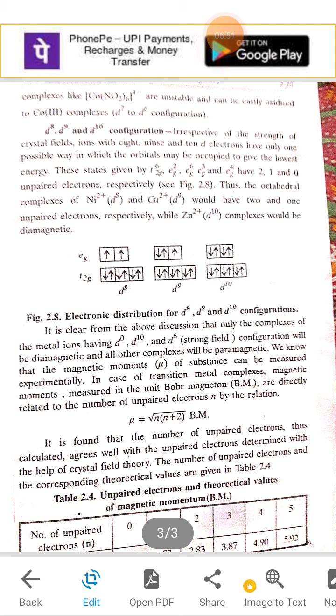So the complexes of zinc are also colorless. If they are colored, they are due to charge transfer spectra.